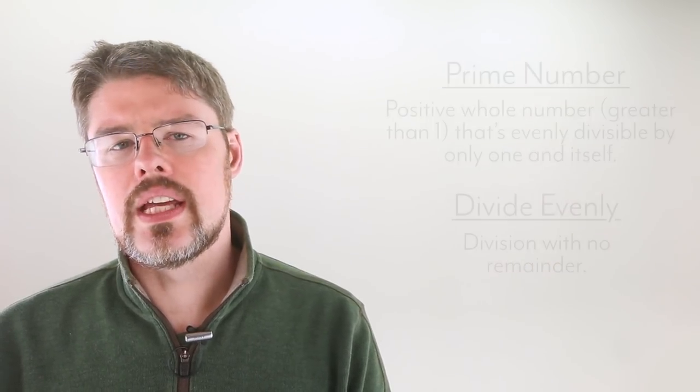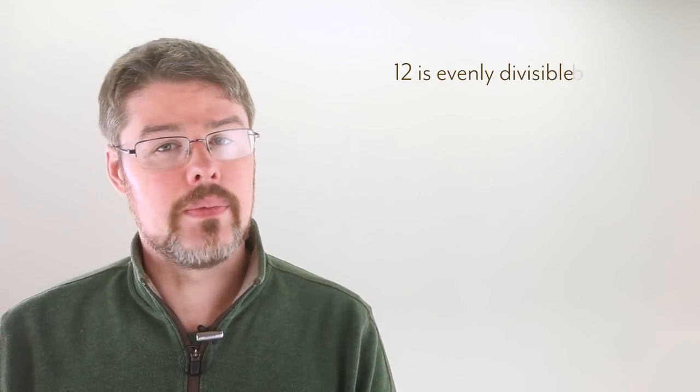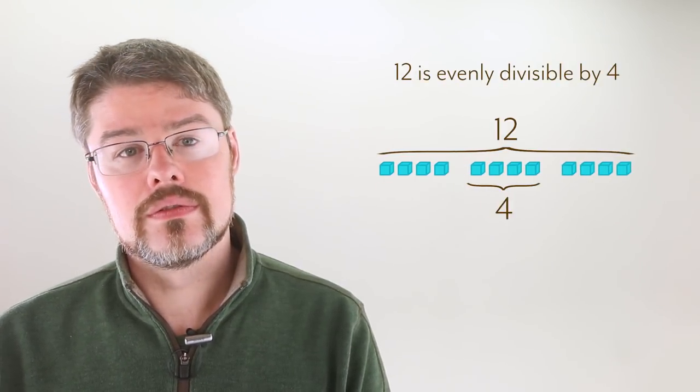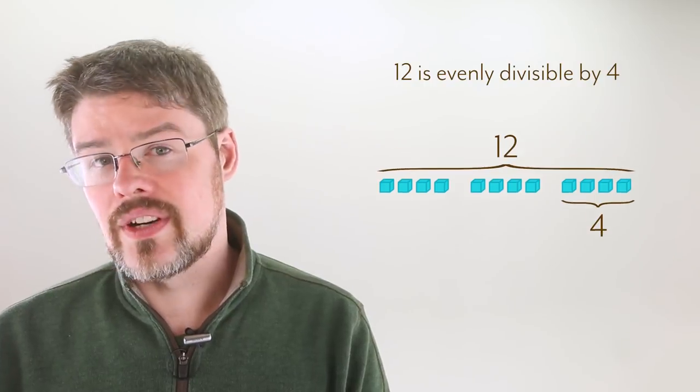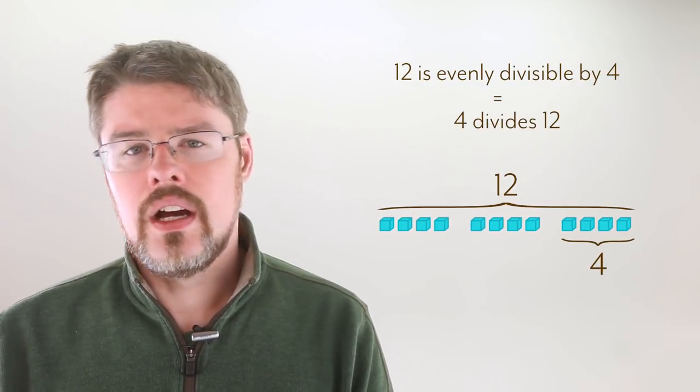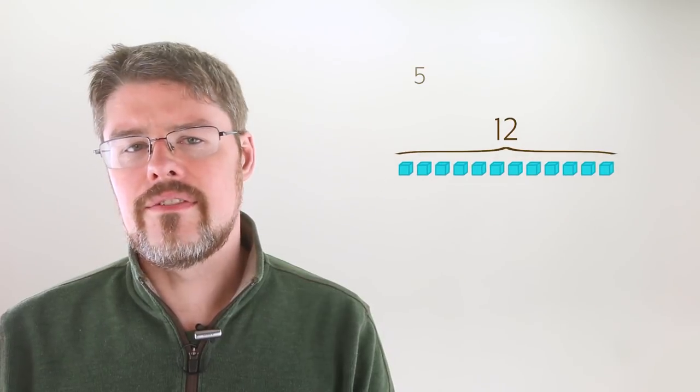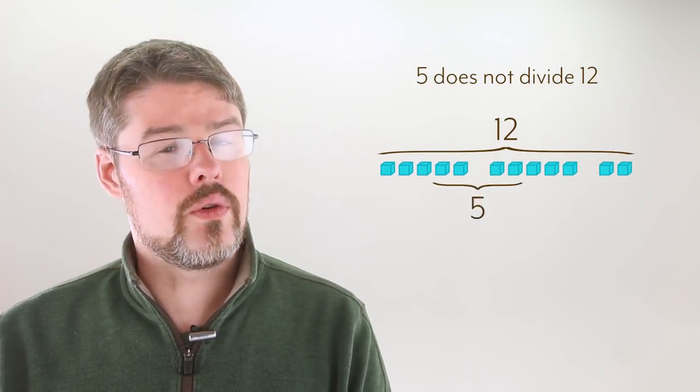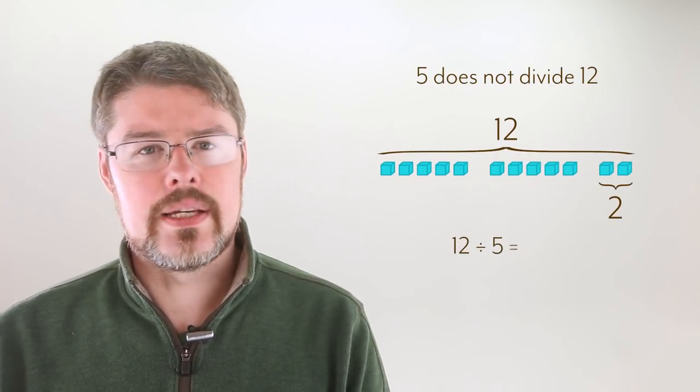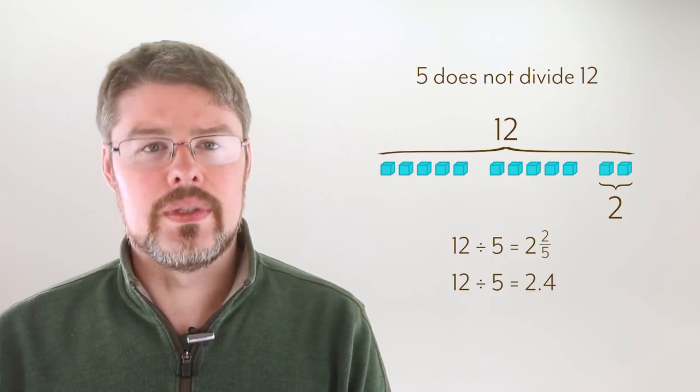For example, you would say that 12 is evenly divisible by 4, like so. We can also phrase this as 4 divides 12. On the other hand, you wouldn't say that 5 divides 12 because you have a remainder of 2. This can be written as a proper fraction, or as a decimal, like so.